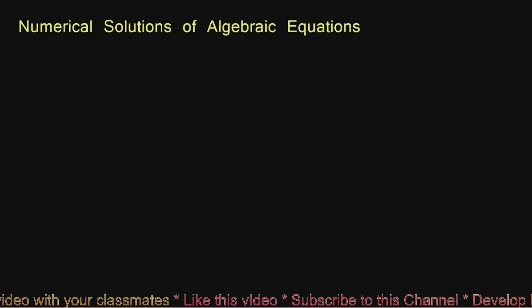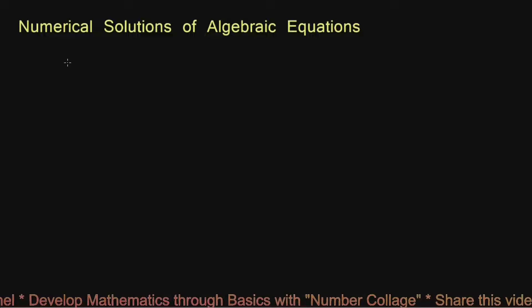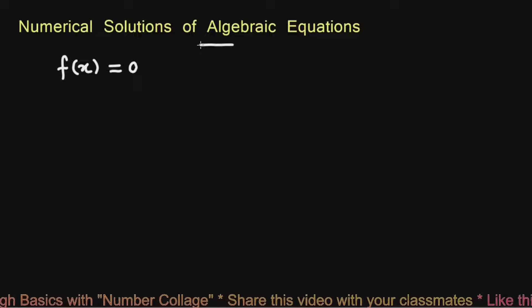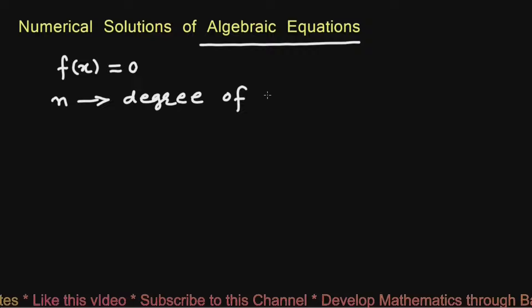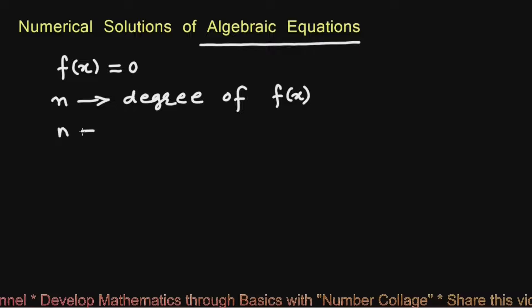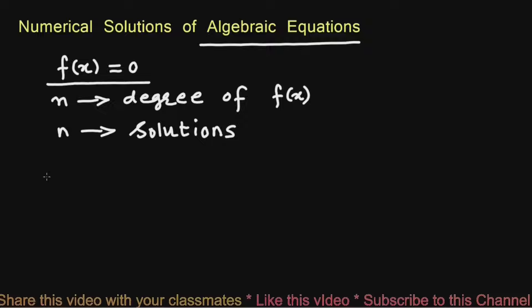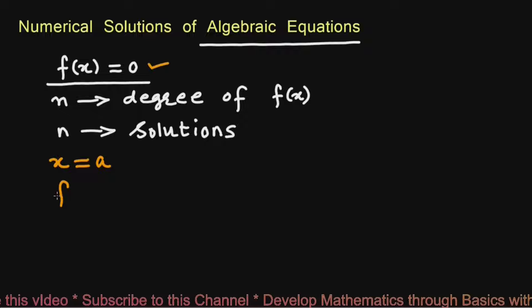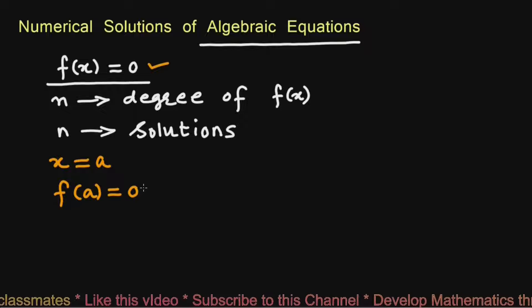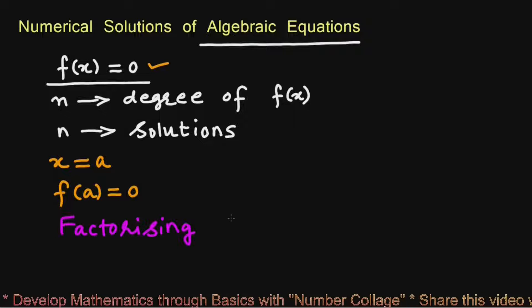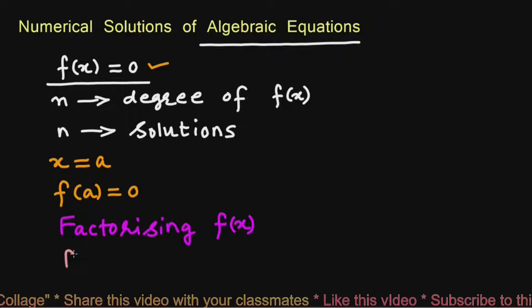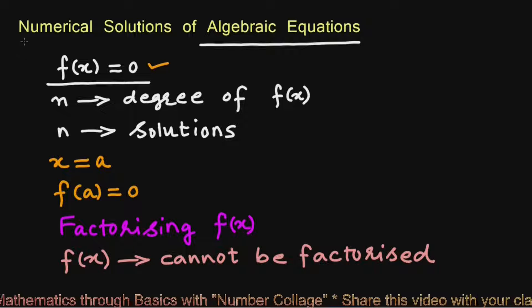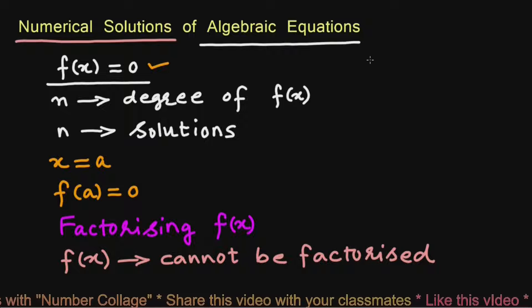In this video, we are going to talk about numerical solutions of algebraic equations. If f(x) is a polynomial of degree n and we equate this polynomial to 0, then what we get is an algebraic equation. If n is the degree of polynomial f(x), then there will be n number of solutions. Generally, the solutions can be found by factorizing the polynomial f(x), but if f(x) cannot be factorized, then we use numerical solutions of algebraic equations.